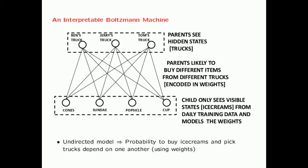The child only knows there are three trucks from which the parents buy ice cream, but has no idea of the weights between the trucks and the ice creams. However, the child might notice correlations between the visible bits—for example, whenever she gets a cone, she also gets a sundae but not a popsicle. Whenever she gets a popsicle, she gets a cup but not a sundae. This might mean cones and sundaes come from one truck, and popsicles and cups from another.